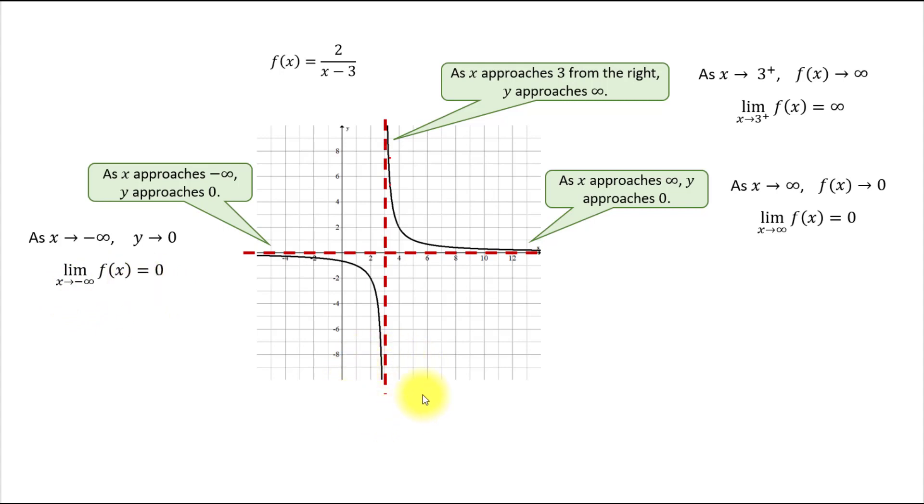And finally, this end of the graph. It continues down without bound. What can we say about the x values? This line slowly moves to the right, but there is a vertical asymptote on its way, which it cannot cross or touch. So the x values are getting closer and closer to three. X approaches three, this time from the left.